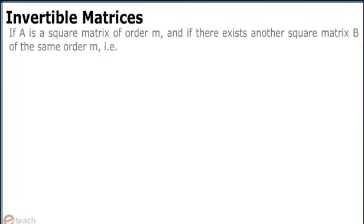Invertible matrices. If A is a square matrix of order M, and if there exists another square matrix B of the same order M, i.e.,